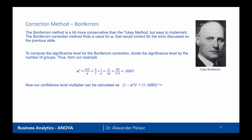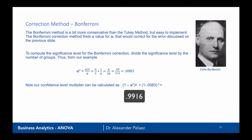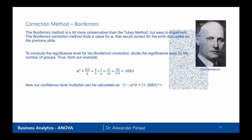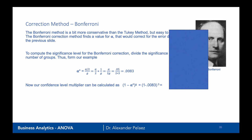Our confidence level: before at alpha = 0.05 we computed 1 − 0.05/2 = 0.975. Here we use alpha-star directly and compute (1 − 0.0083)^3, which gives a new value of 0.9916 per comparison. When we multiply 0.9916 × 0.9916 × 0.9916 across our three pairwise comparisons, we end up with 0.9752 — our 95% family-wise confidence interval, similar to the alpha/2 approach from the original t-test.